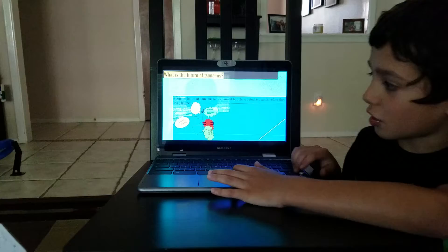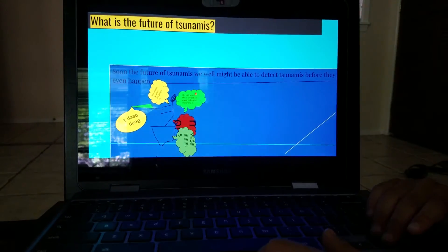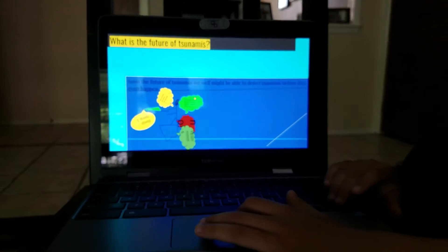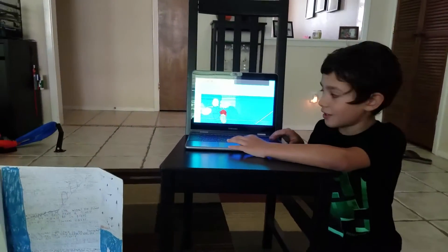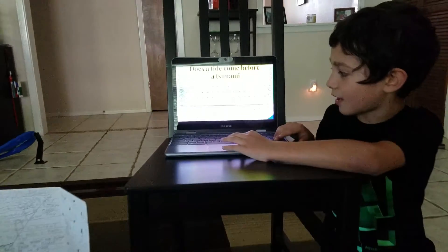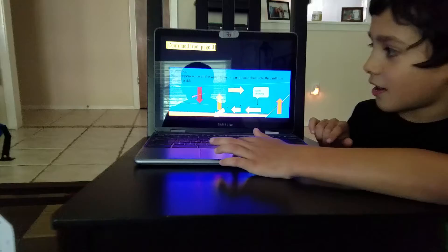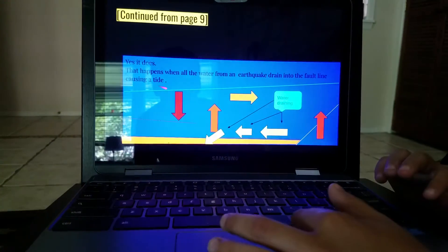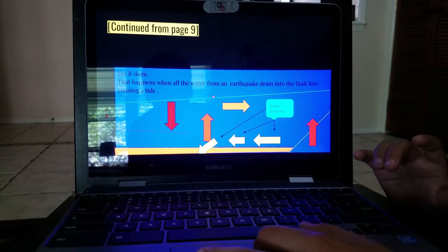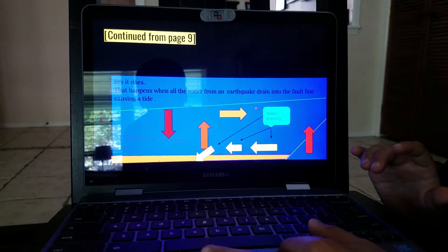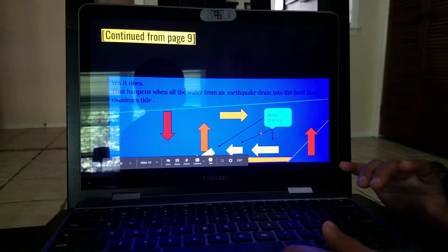And what is the future of tsunamis? Soon we might be able to detect tsunamis before they even happen. Does a tide come before a tsunami? Yes, it does. That happens when all the water from an earthquake drains into a fault line causing a tide. The water also never comes back either.